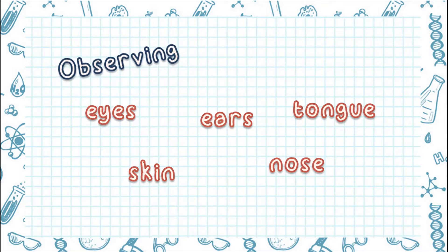Observing means finding more information about something. When you observe something, you use your sense organs. You use your eyes to carefully look at the object, your ears to listen, your tongue to taste, and your skin to touch.